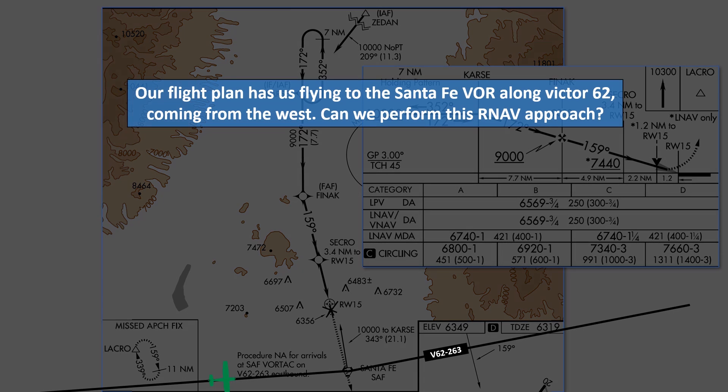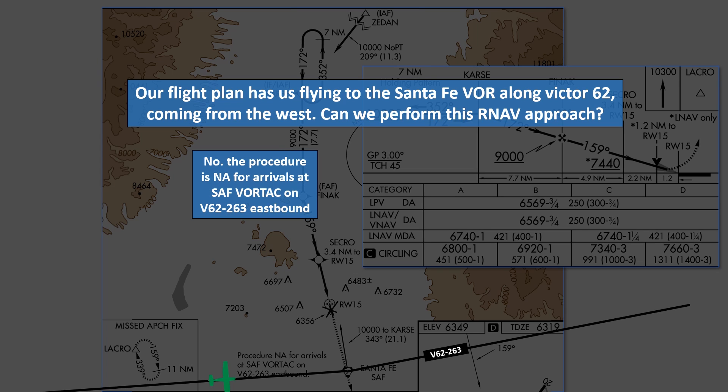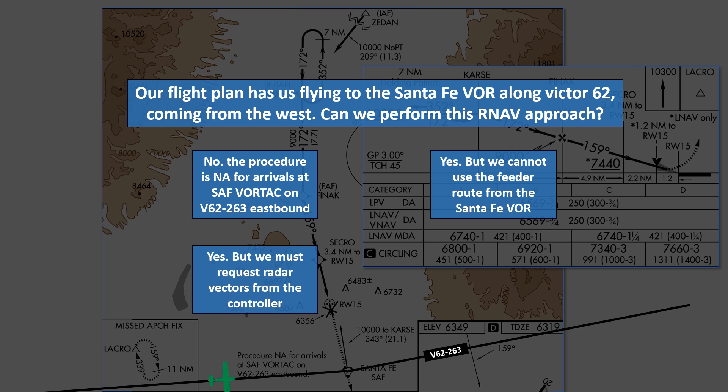The first question is: given the scenario, are we allowed to perform this RNAV approach? No, the procedure is not allowed for arrivals at the Santa Fe Vortac on Victor 62 263 eastbound. Yes, but we can't use the feeder route from the Santa Fe VOR. Yes, but we need to request radar vectors from the controller. Or no, we should request a different approach and circle to Runway 1-5 if that's where we want to land.